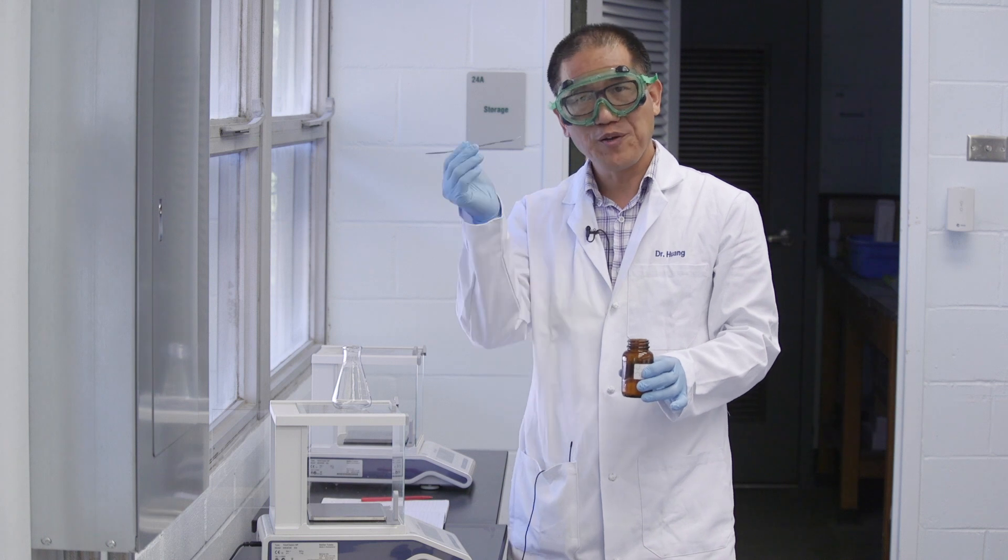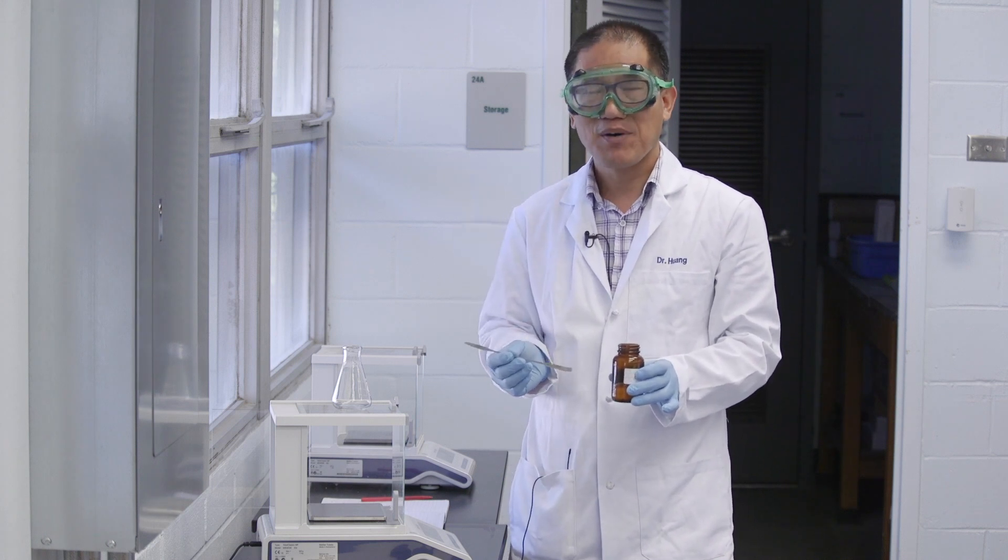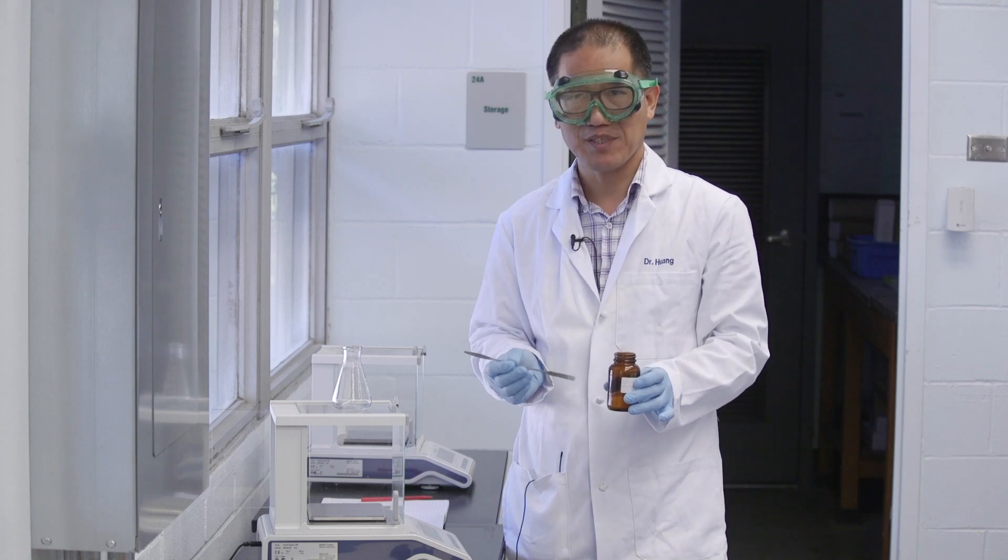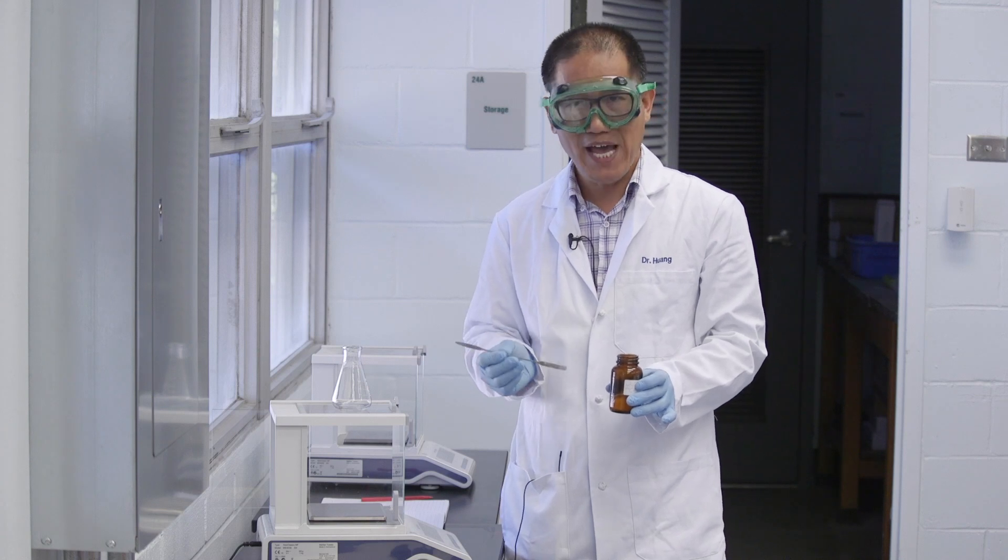We will use a scoopula to add KHP to the Erlenmeyer flask. But the problem is we don't know how much is 0.2 grams. The strategy is we add a tiny amount and get the mass.